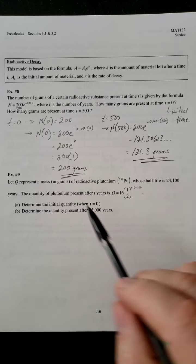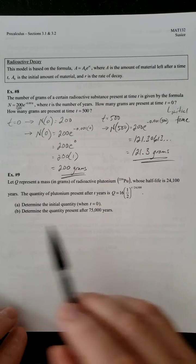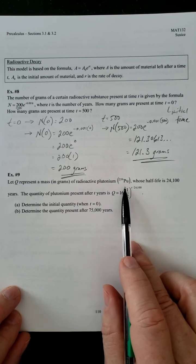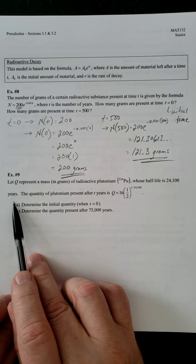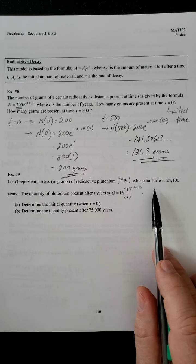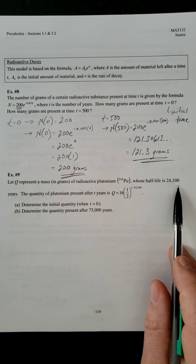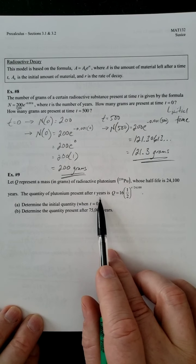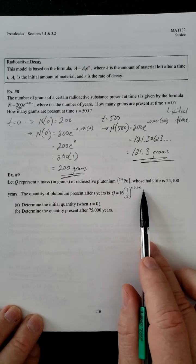So not much to it. Again, you're just plugging and chugging. Once we get into the next section, we're going to see there's a lot more cooler applications we can do related to radioactive decay. But for now, a lot of this is just going to be plugging and chugging. So, let Q represent a mass in grams of radioactive plutonium whose half-life is 24,100 years. Wow. So remember, half-life just means that how long does it take for something to be cut in half of its original size? So whatever you started with, it's going to take 24,100 years for it to get cut in half. That's a pretty long time. The quantity of plutonium present after T years is equal to Q, 16 times one-half raised to the T over 24,100.